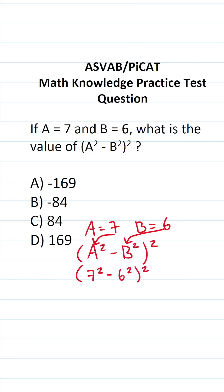According to the order of operations, we're going to do what's in parentheses first. 7 squared is the same thing as 7 times 7, which is 49. 6 squared is the same thing as 6 times 6, which is 36.